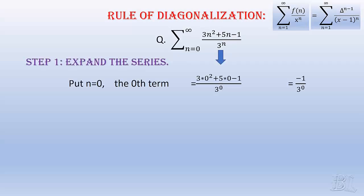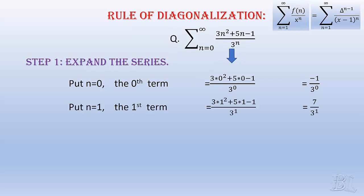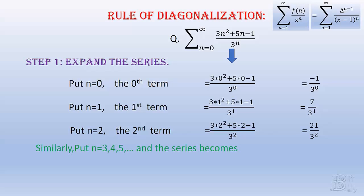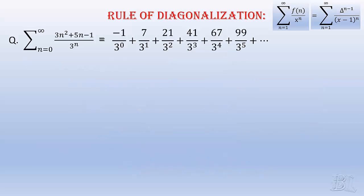The series starts from n equals 0. So, we expand the series by putting n equals 0, n equals 1, n equals 2, n equals 3 and so on. Then, we get the series as shown here. For our convenience, we put this in a format such that the denominator part consists of increasing power of same number, that is, 3 in this question.